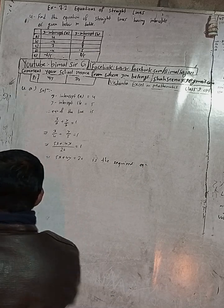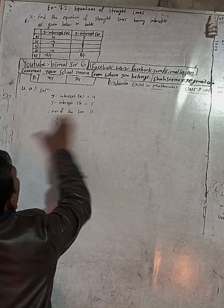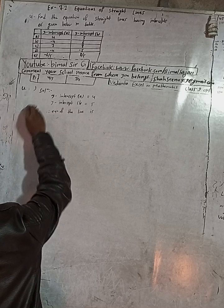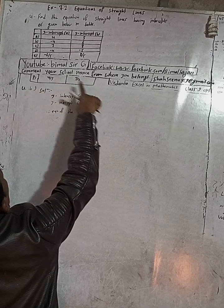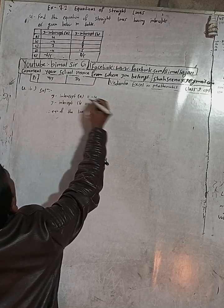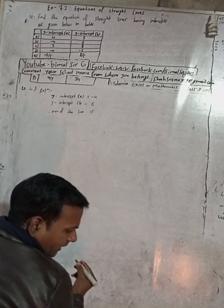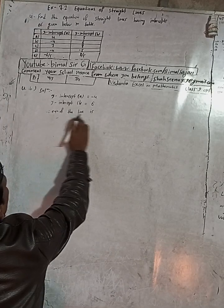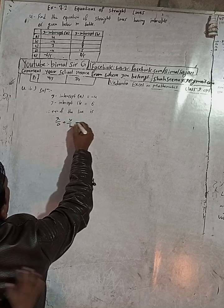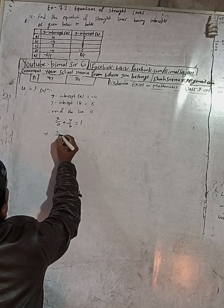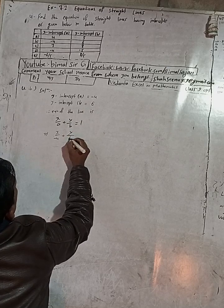Now for part B. In part B, x-intercept A is equal to minus 4, and y-intercept is 6. Therefore, the equation of the line is given by x/a + y/b = 1. In place of A put minus 4, and in place of B put 6, giving x/(−4) + y/6 = 1.